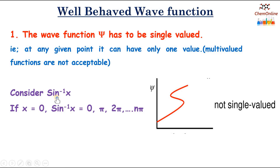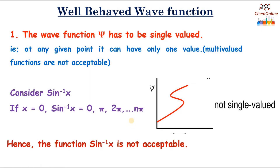Consider the function sin⁻¹(x). If x = 0, then sin⁻¹(0) = 0, π, 2π, etc., up to nπ. So the function sin⁻¹(x) is multi-valued and therefore not acceptable.